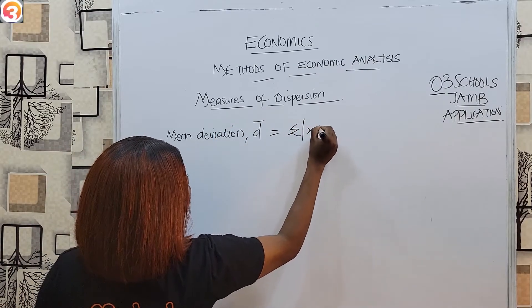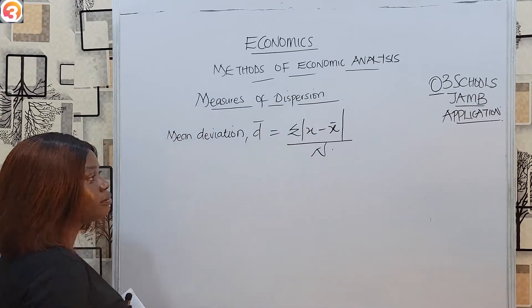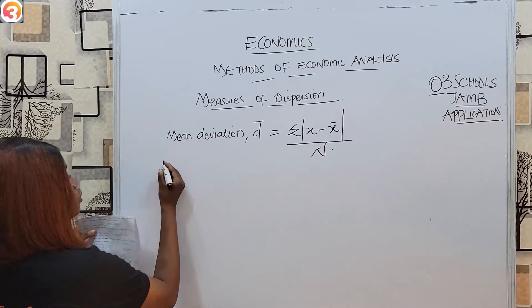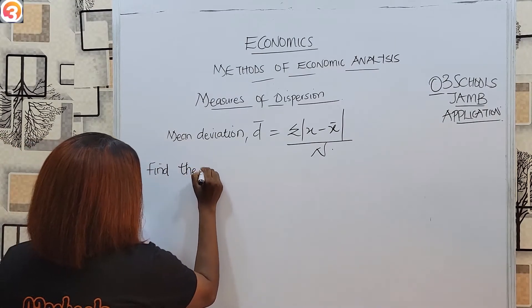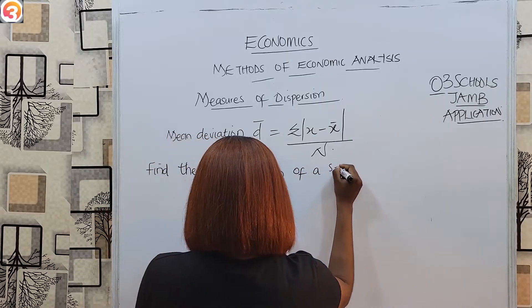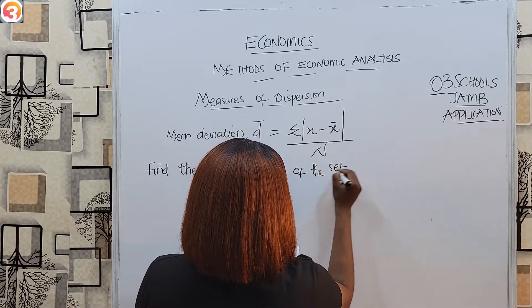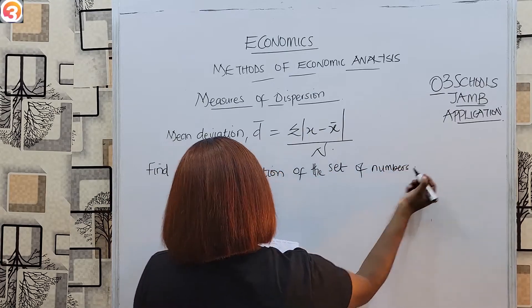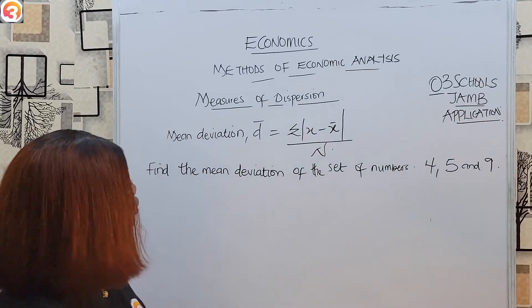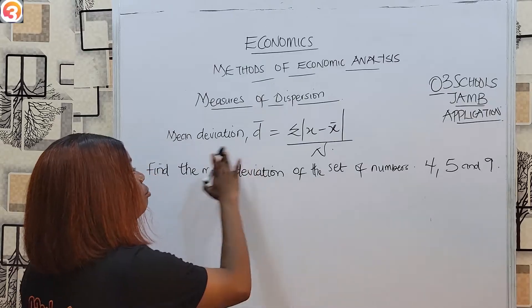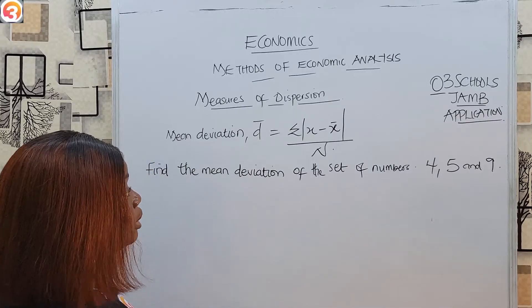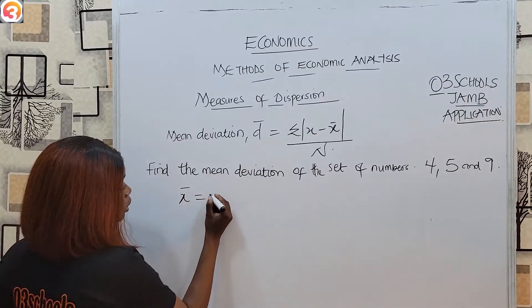The formula is D equals summation of |x minus x̄| over n. Now let's look at this question: find the mean deviation of the set of numbers 4, 5, and 9. Using the formula, the first thing we have to find is the mean x̄. The mean equals the sum of numbers over the total frequency.